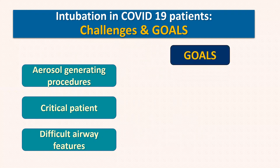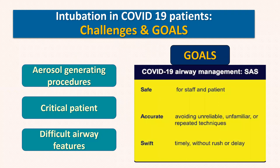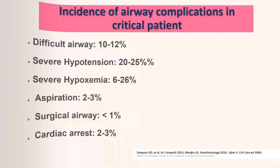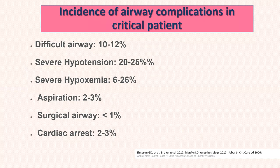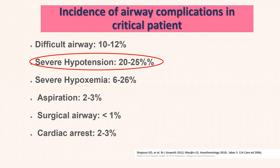Our goals in approaching the airway in those patients are to be safe for the staff and the patient, and accurate — to avoid any unreliable, unfamiliar, or repeated techniques — and to be swift, doing the procedure timely without rush or delay. We know that airway management in a critical patient is more risky compared to the OR patient. We can face 10 to 15% difficult airway, 25% incidence of hypotension, 25% incidence of hypoxemia, and other complications.